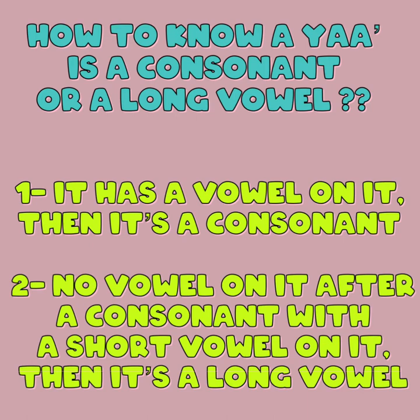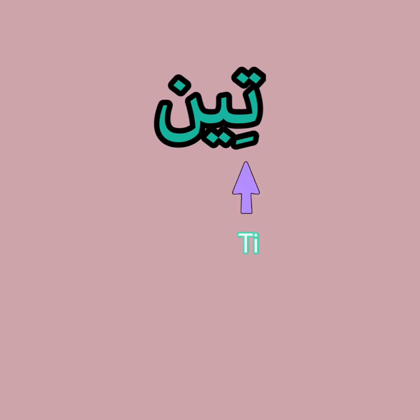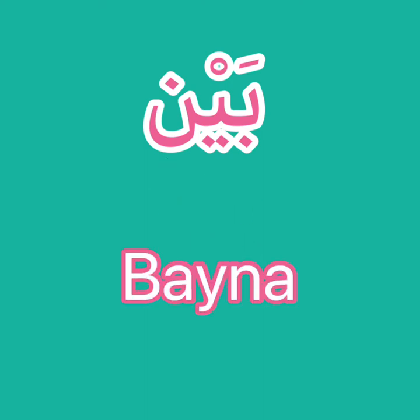Now let's practice some reading examples using the letters we have learned. Word number one: Ya-Noon — please pause the video and write the English version of how you would read this word. It is 'yanbot,' which means 'it's growing' or 'it's planting.' Second word: Ta-Ya-Noon — pause and try to pronounce it. It is 'teen,' meaning 'figs.' Third word is 'bayna,' meaning 'between.'